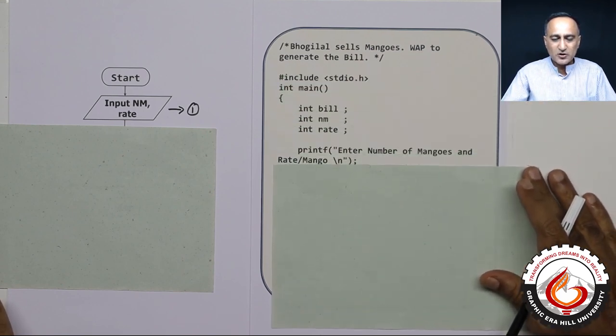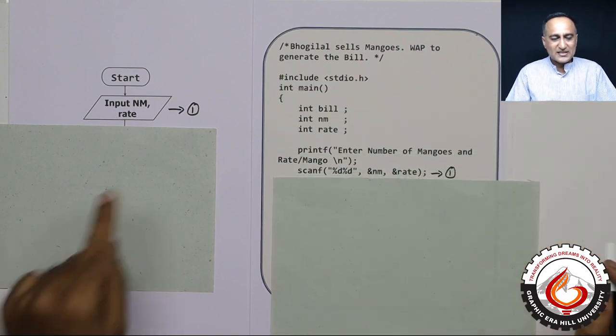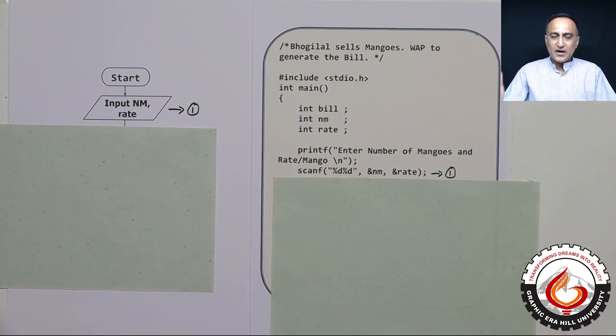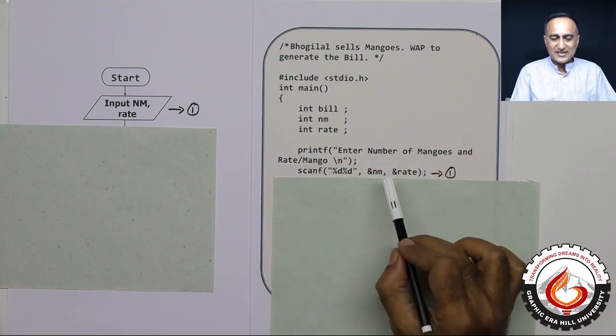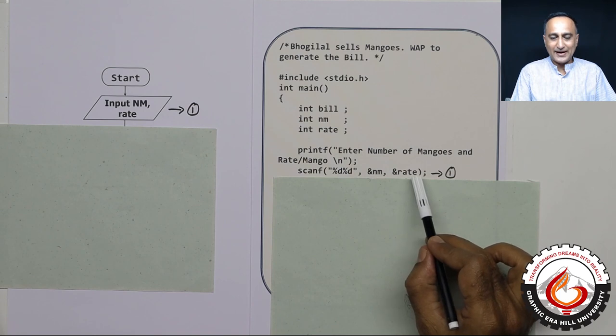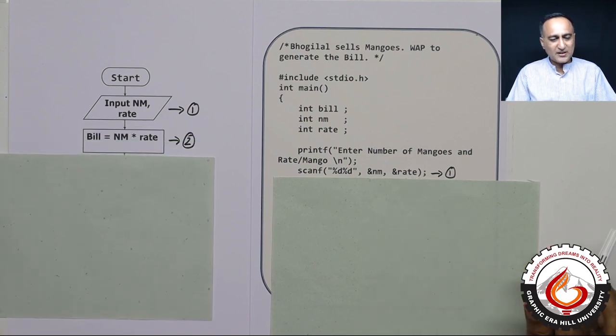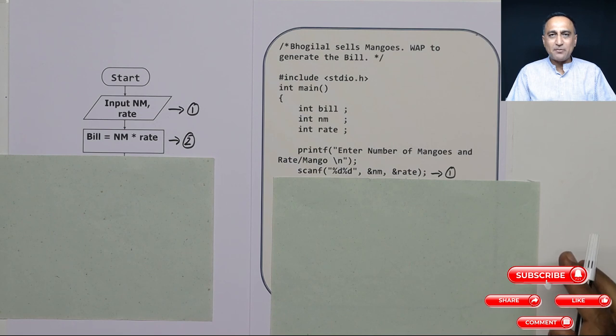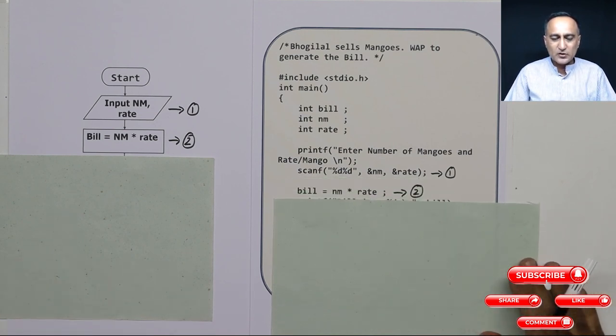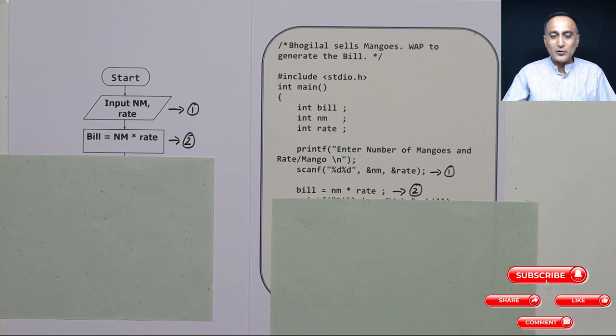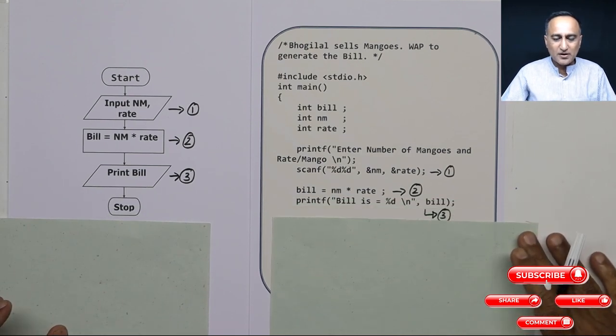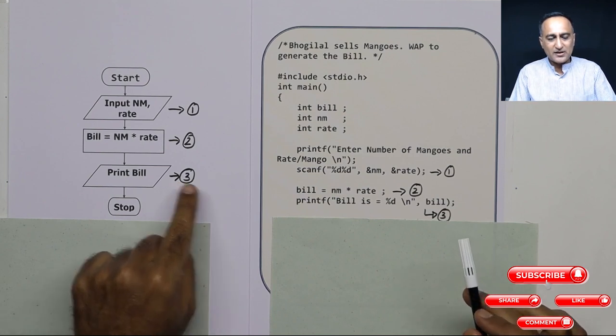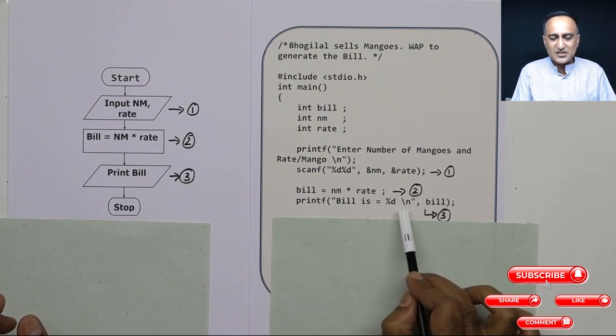If you look at the corresponding logic here, step number one has been taken here. I have asked the person enter the number of mangoes and the rate per mango. Let us say number of mangoes is 100 and rate per mango is eight. So in the next step, what is being done in the flowchart is bill is number of mangoes into rate. The same should be here. So here again, we have bill is number of mangoes into rate. Then last step in the flowchart is we are simply printing the bill amount and stopping. Same I should be doing here. I am saying step number three is taken here, I am saying bill is %d bill.